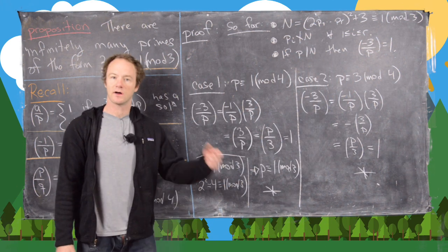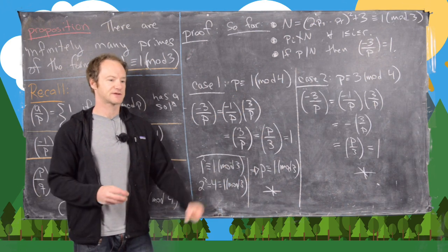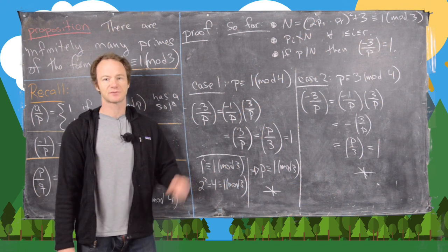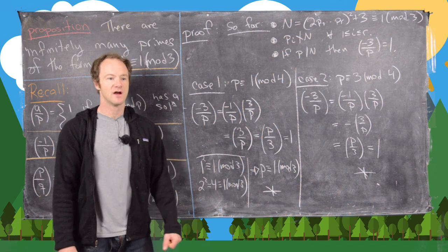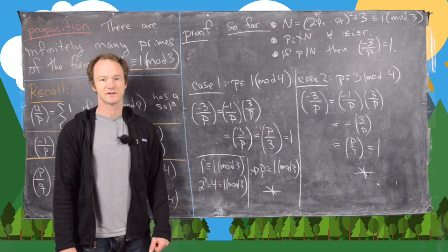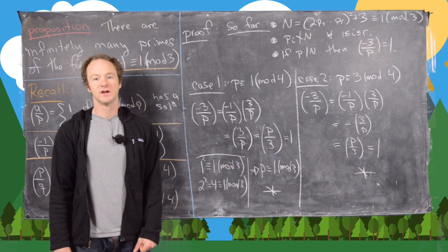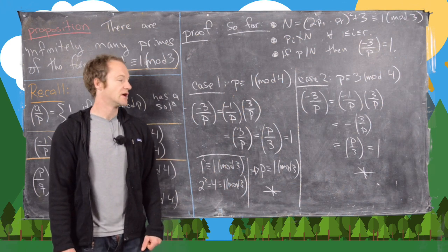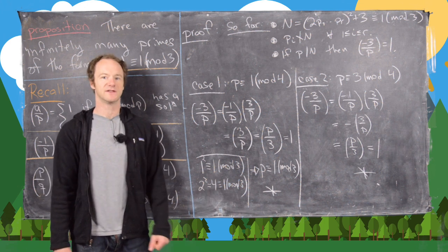So in both cases we reach a contradiction. I now have three videos proving that there are infinitely many primes of a certain form, each using slightly different techniques. Between these three videos you should have all the techniques necessary to prove infinitely many primes of a given form. This is the end of the video.